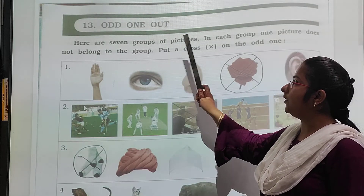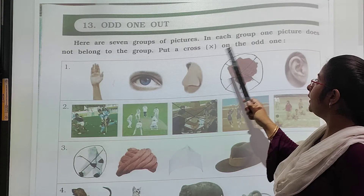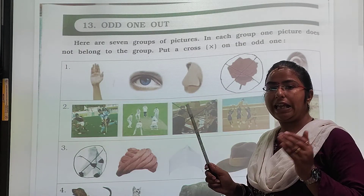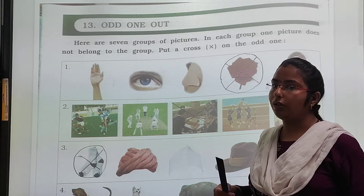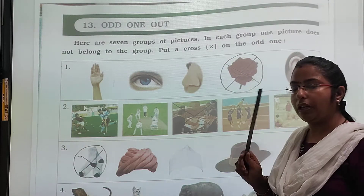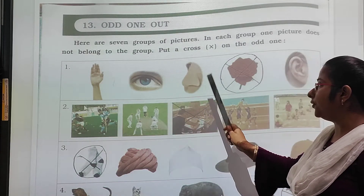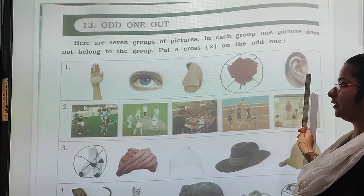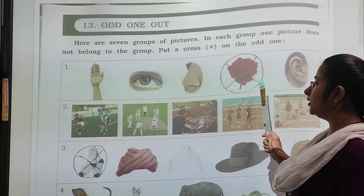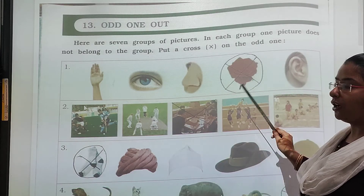Here are seven groups of pictures — we have a total of seven pictures given here. In each group, one picture does not belong to the group, and you have to put a cross on the odd one out. So, first picture: this is hand, eyes, nose, and ears — these are the parts of the body, and this one only is a group. So this is the odd one, and we will put the cross.